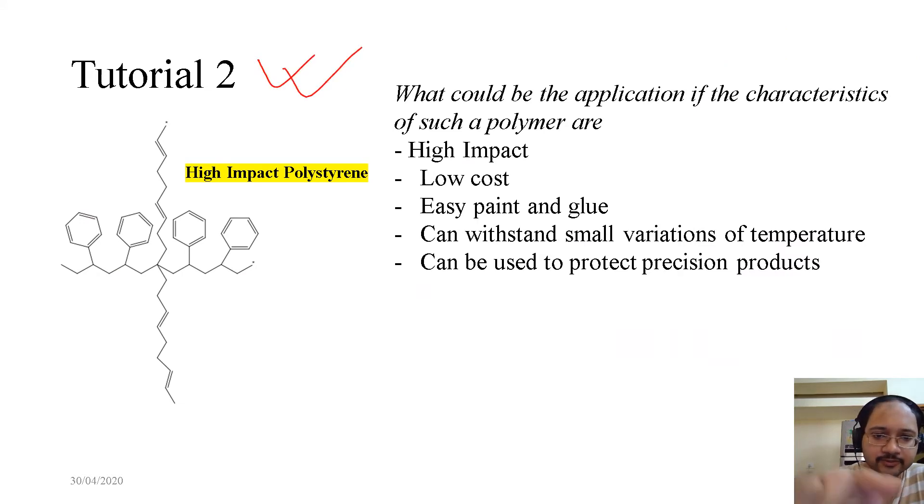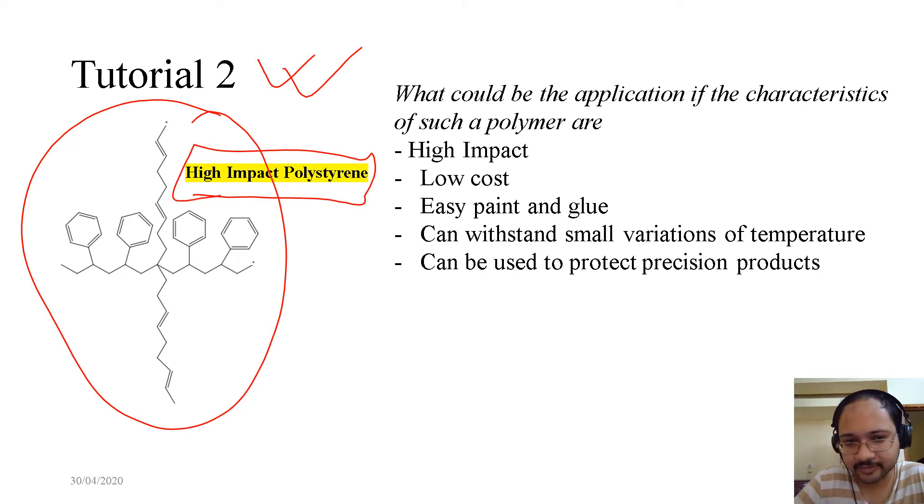Coming to tutorial 2. Now, you see this structure. Obviously, I am not expecting you to memorize the structure, but just see some sort of symmetries available in the structure. This is a typical high-impact polystyrene, which is also abbreviated as HIPS. So, this high-impact polystyrene, if these are the characteristics, then can you guess its application?